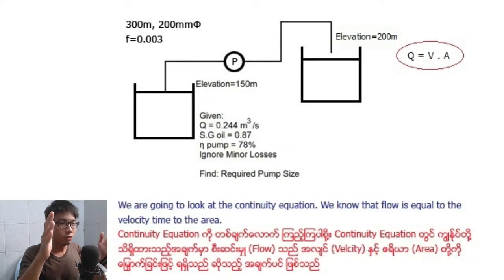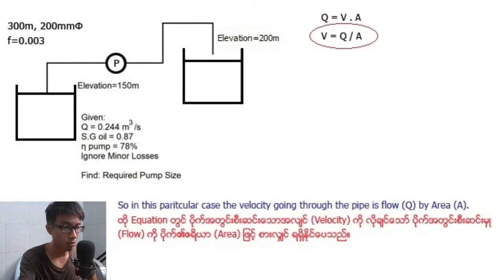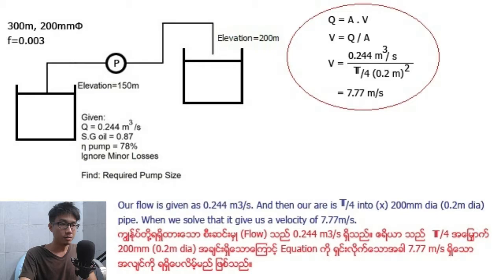We are going to look at the continuity equation. We know that flow is equal to the velocity times the area. In this particular case, the velocity going through the pipe is flow divided by pipe area A. Our flow is given as 0.244 cubic meters per second.